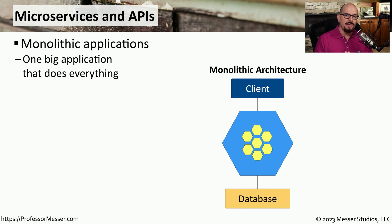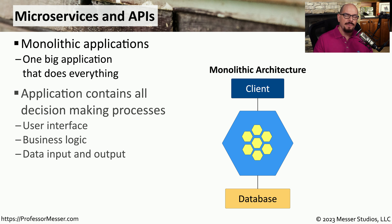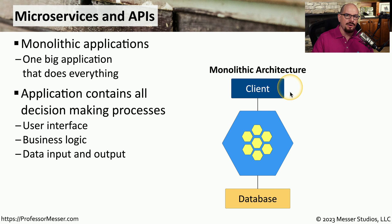Cloud infrastructures also allow us to have extremely efficient application instances. Traditionally, we've used monolithic applications running on our desktops — large applications installed onto storage drives, running all in the memory of the system, where that one big application handles all functions you need. Everything about that application runs as one single executable: the user interface, the login screens, and all of the business logic all occur on the client of that monolithic architecture.